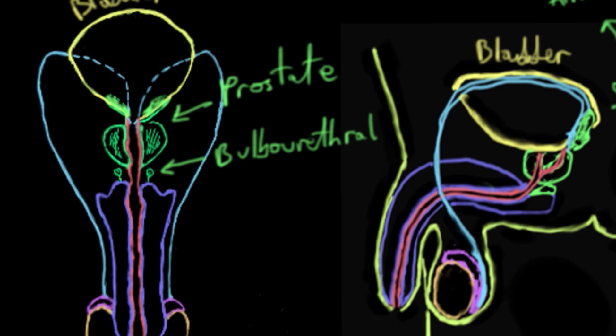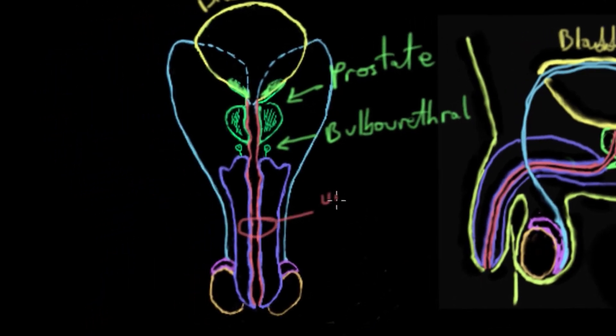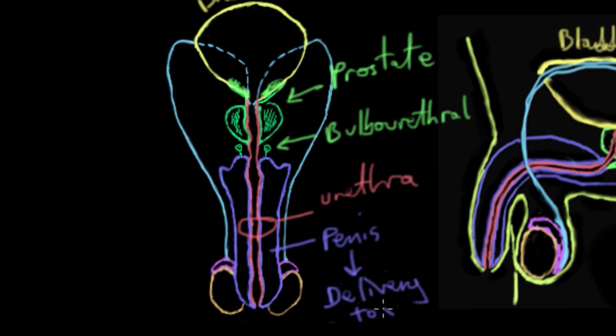The bulbourethral gland makes a thick lubricant for both the urethra and the vagina. Now semen actually travels through a tube called the urethra, which you can see here in red, to get to the outside of the body. It travels through the urethra, through the penis, which is here in purple-blue. In reproduction, the role of the penis is to actually penetrate the vagina so that sperm can be deposited inside.